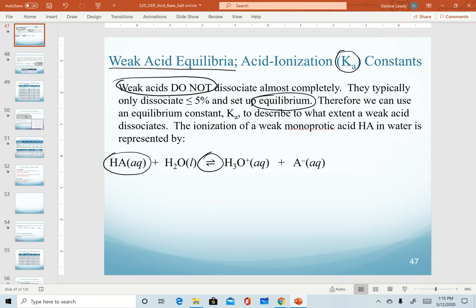But you can use a generic equation such as this to recognize that there would be one proton that would come off of that acid to generate hydronium and of course our conjugate base.